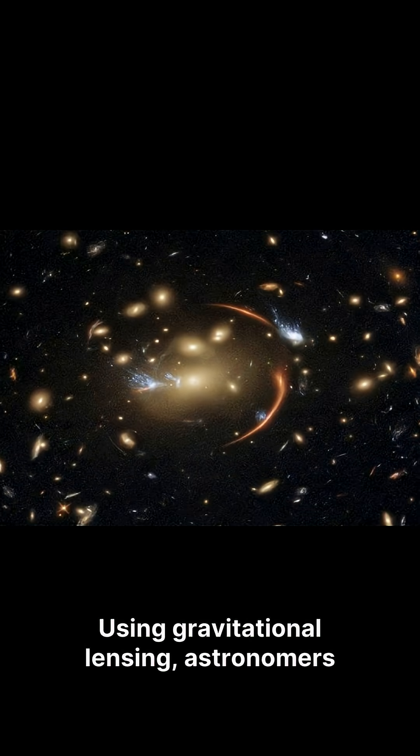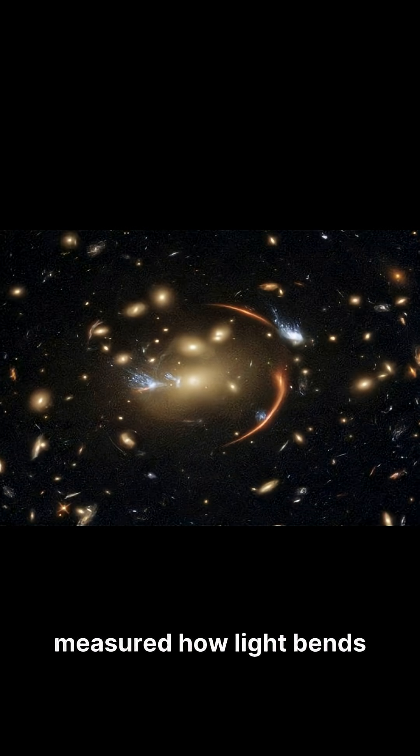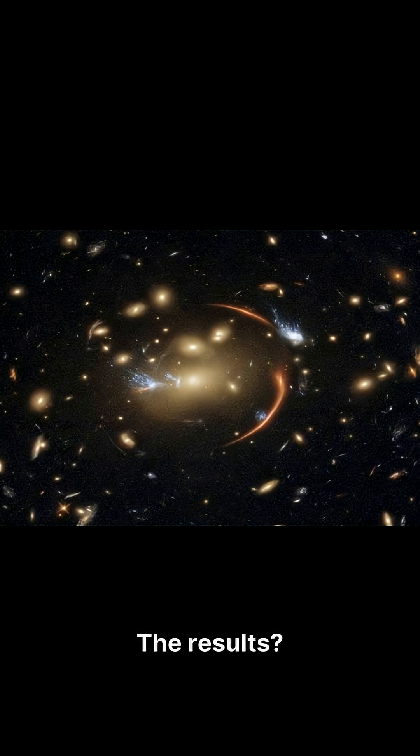Using gravitational lensing, astronomers measured how light bends around these distant galaxies. The results? They don't match what the standard dark matter theory predicts for these structures.